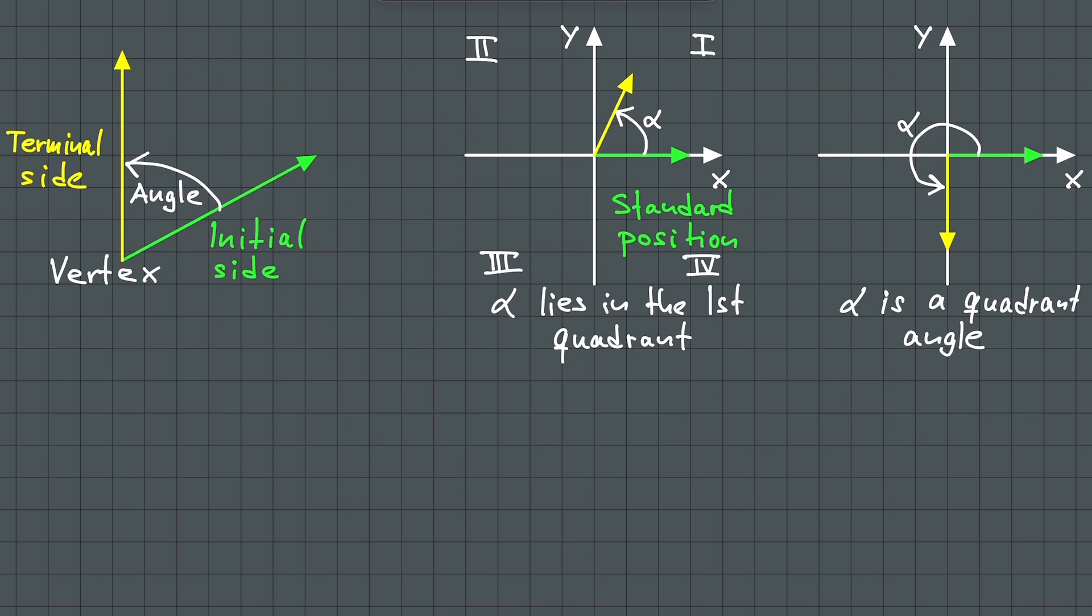Positive angles are generated by counter-clockwise rotation and negative angles by clockwise rotation.